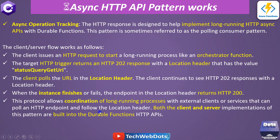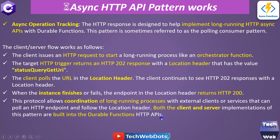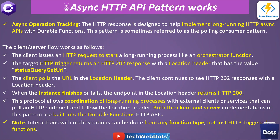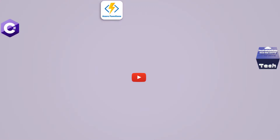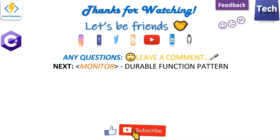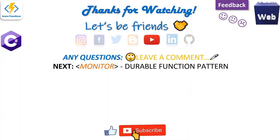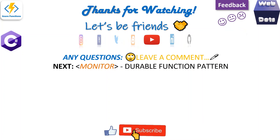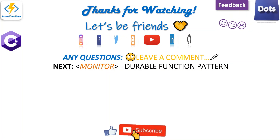HTTP 200 is the symbol of completion. The protocol allows coordinating long-running processes with external clients or services that can poll the HTTP endpoint and follow the location header. Both client and server implementations of this pattern are built into the durable functions HTTP APIs, so we don't need to worry about that — that's the beauty of this async HTTP API pattern. Note: interactions with orchestrations can be done from any function type, not just HTTP-triggered functions. I hope you liked this video. If you have any questions or suggestions, drop them in the comment box and I'll respond as soon as possible. I'll see you in the next video where we'll discuss the monitor pattern — bye bye.